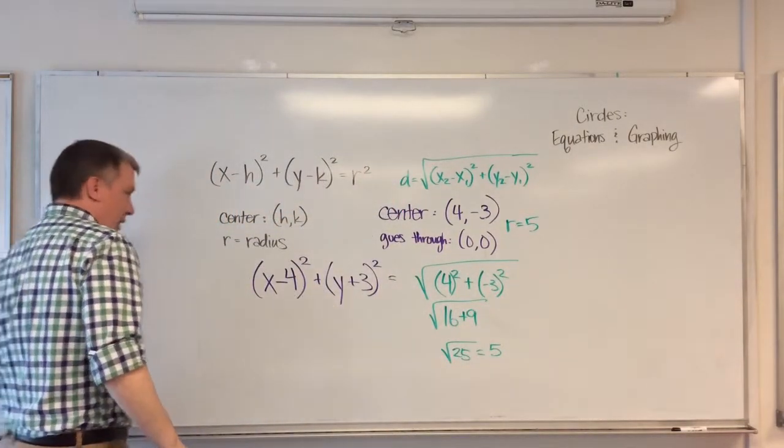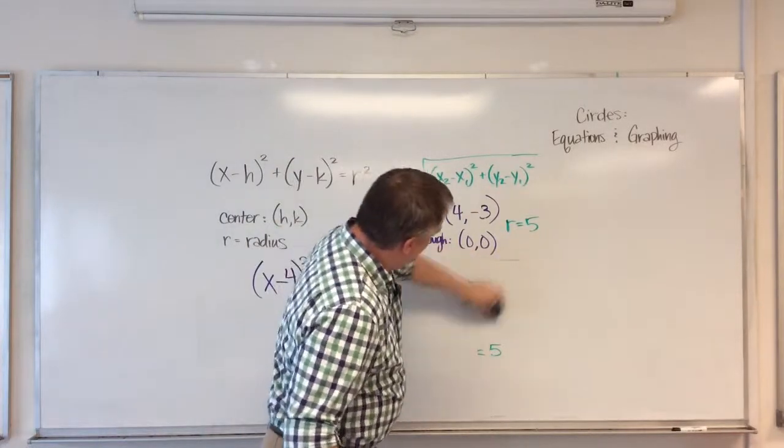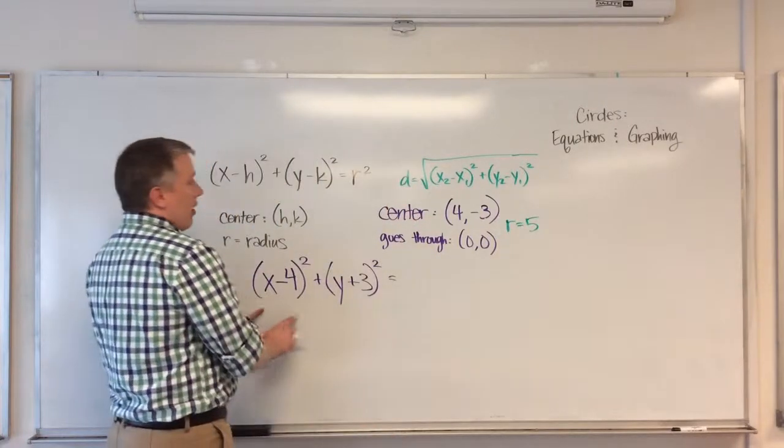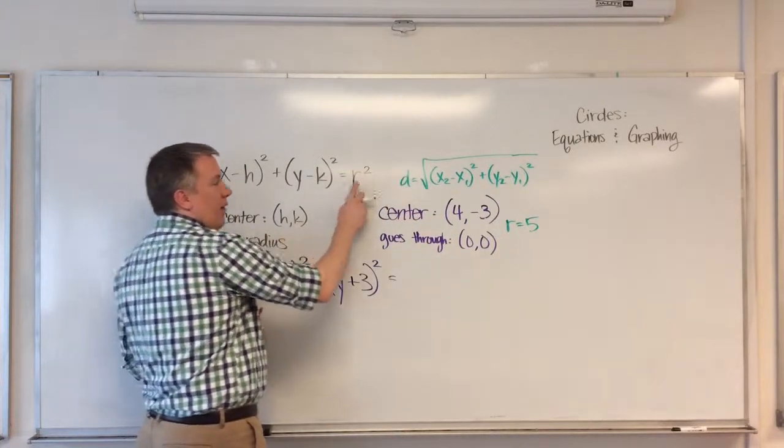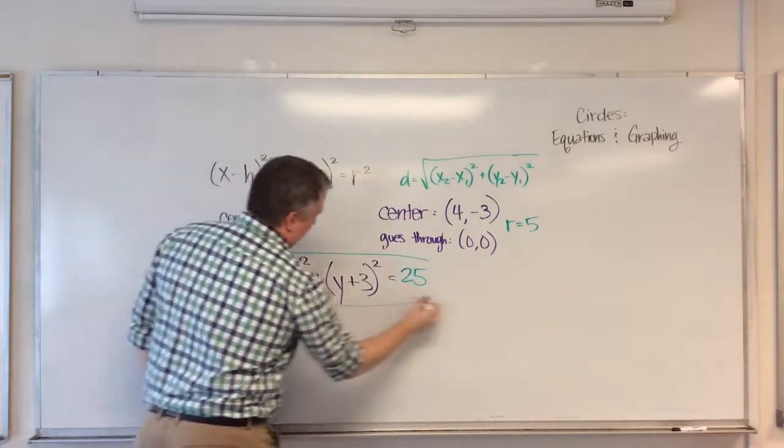The square root of that is 5. So my radius in this case is 5. Let me erase all that work here. So now in my equation, r is 5. 5 squared is 25.